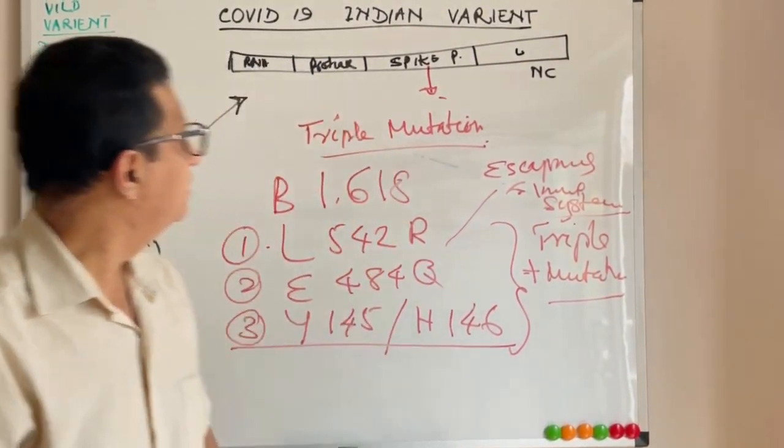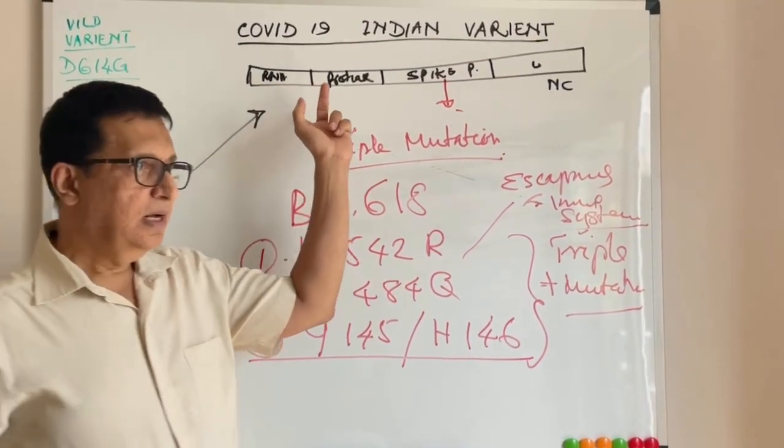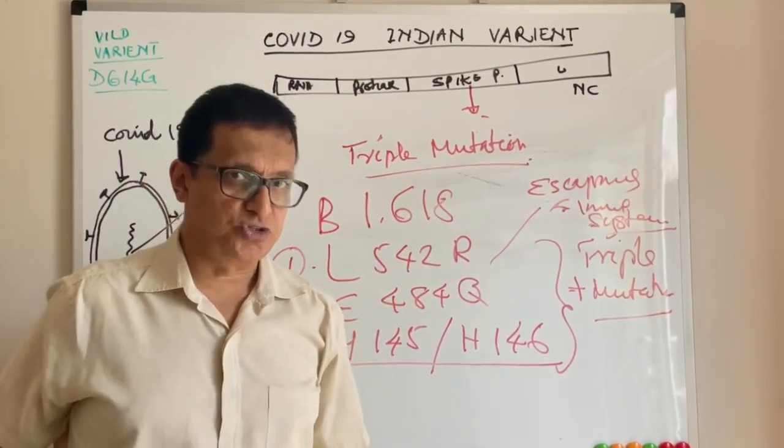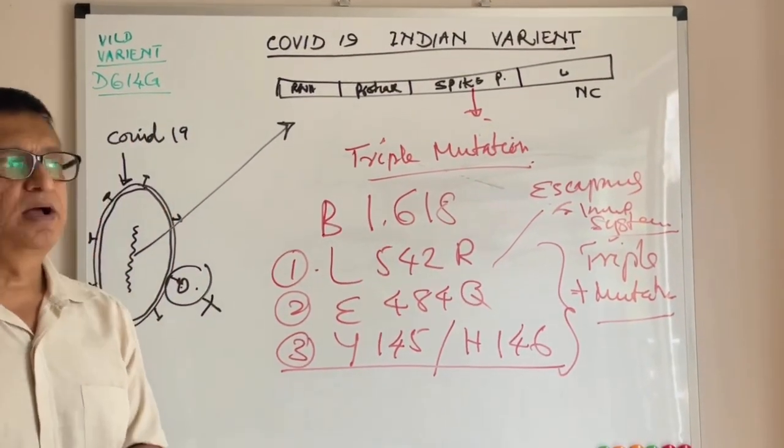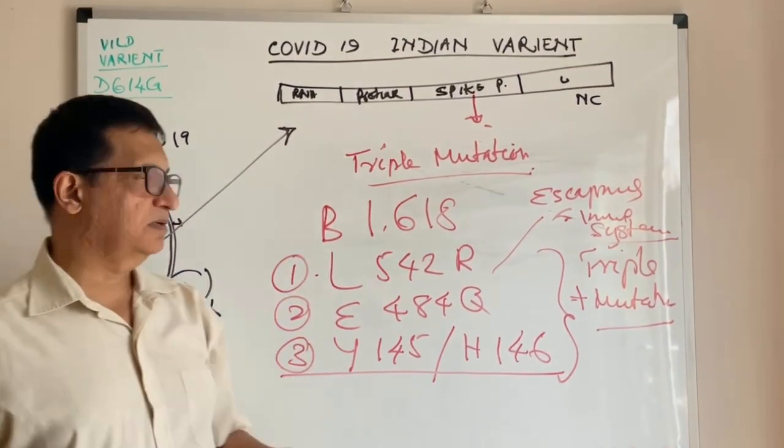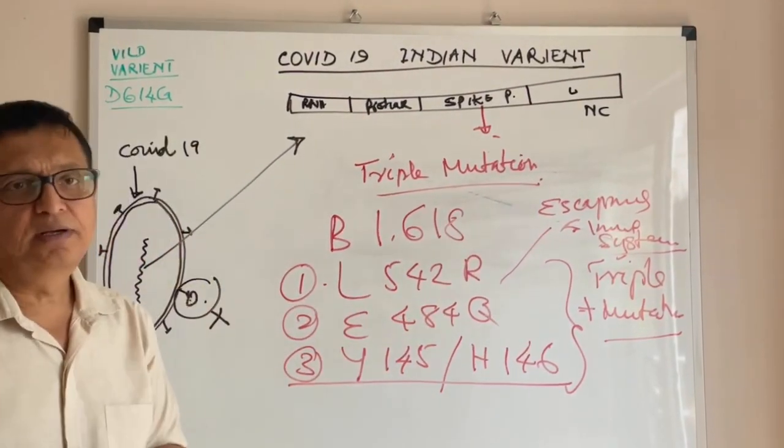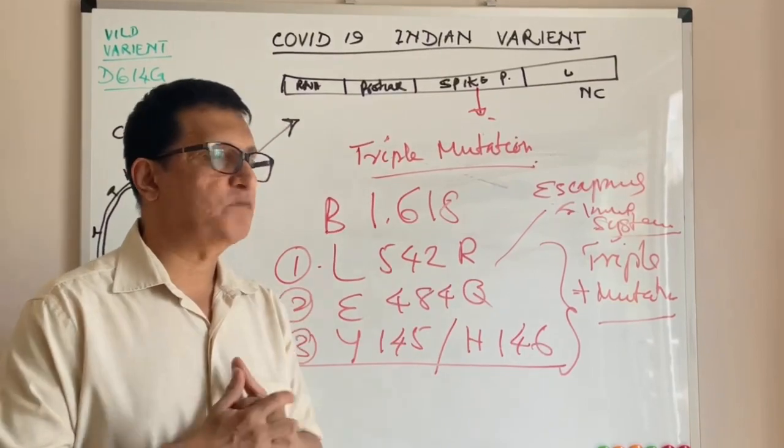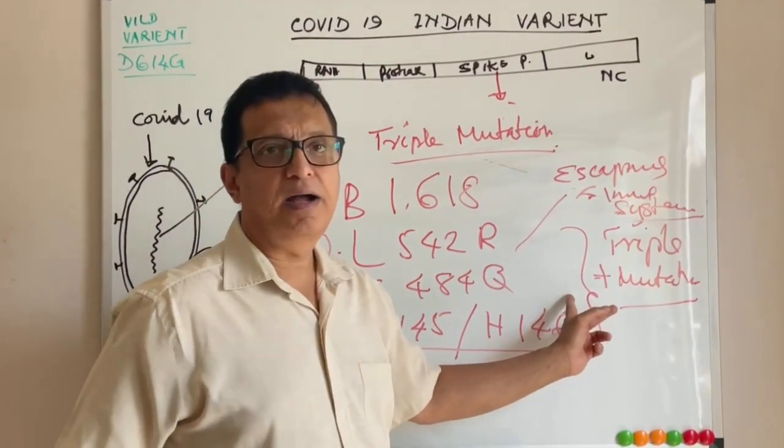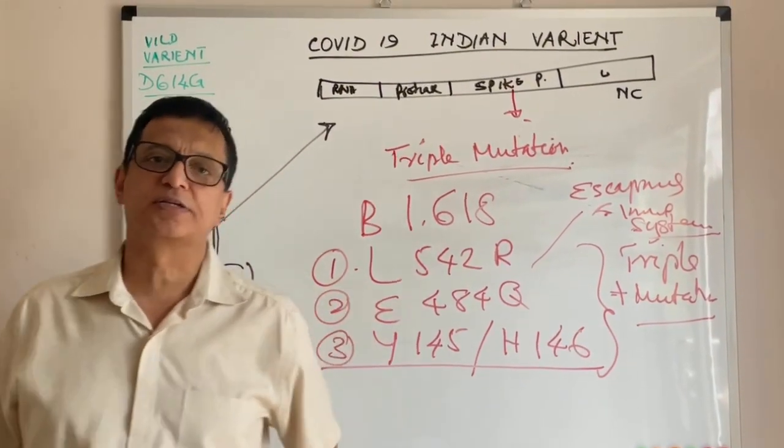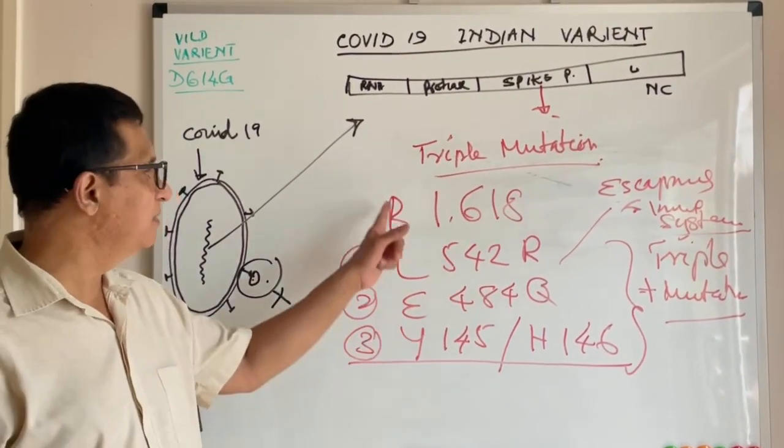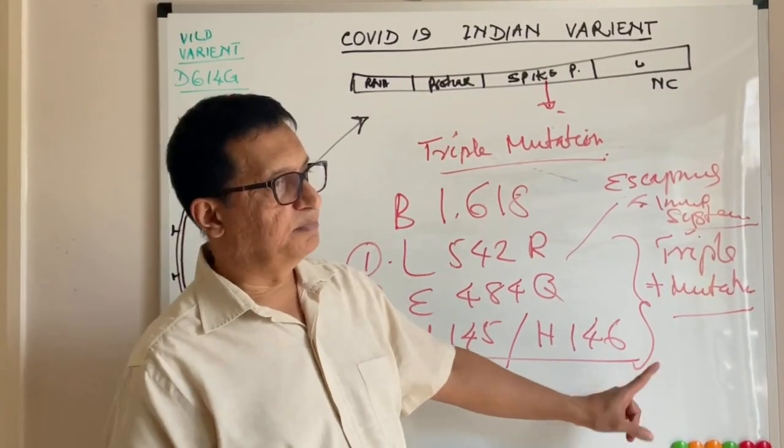The good thing is the double mutation is still not escaping from the immune system. Previous immunity and vaccination can control the double mutation. But about the triple mutation we are not completely aware whether this can escape through the immune system or whether previous antibodies or vaccination can effectively control this variant. This is a very big concern in India, the triple mutation.